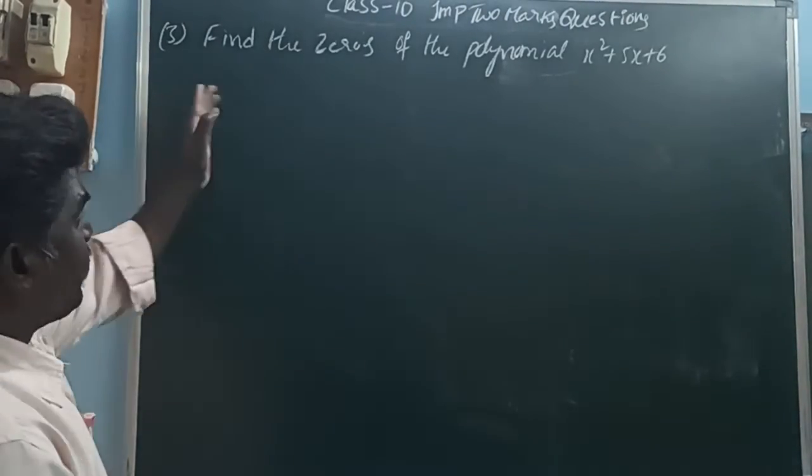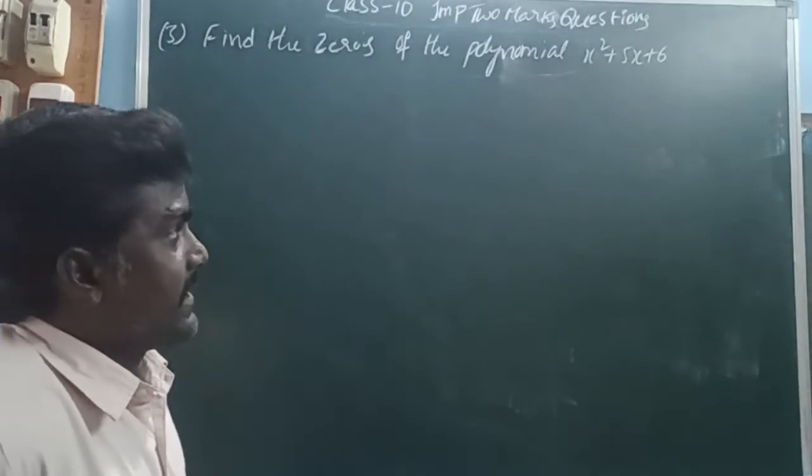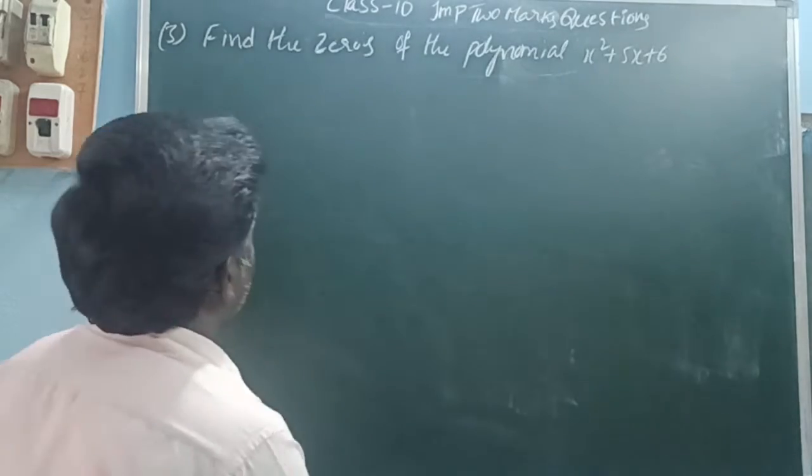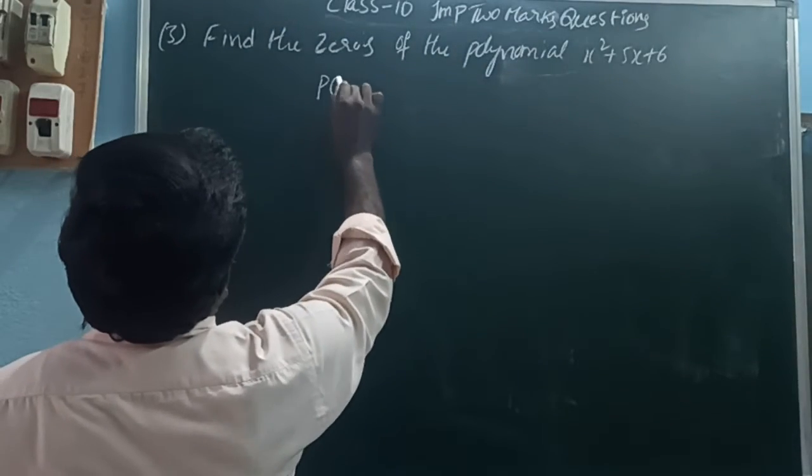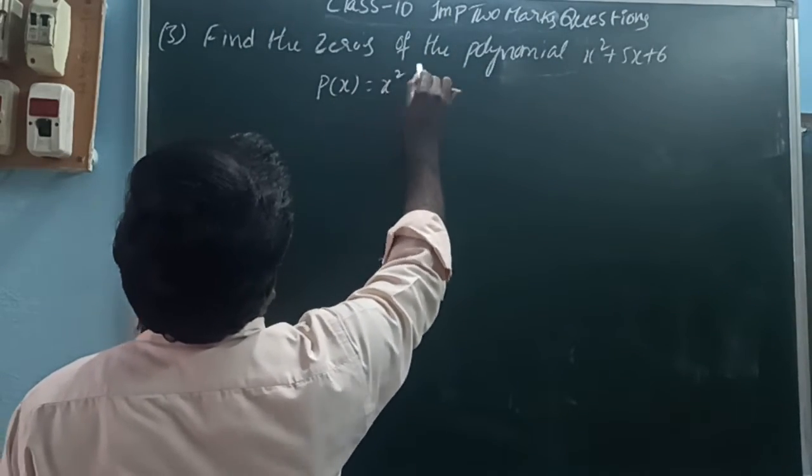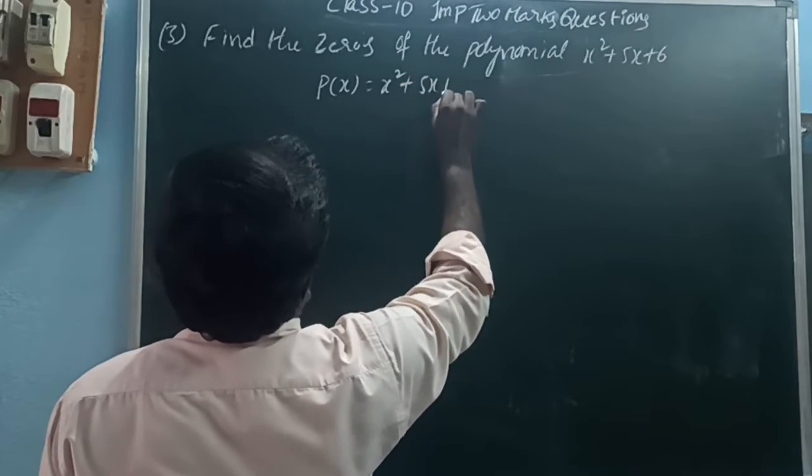Next problem: Find the zeros of the polynomial x² + 5x + 6. So here, P(x) = x² + 5x + 6.